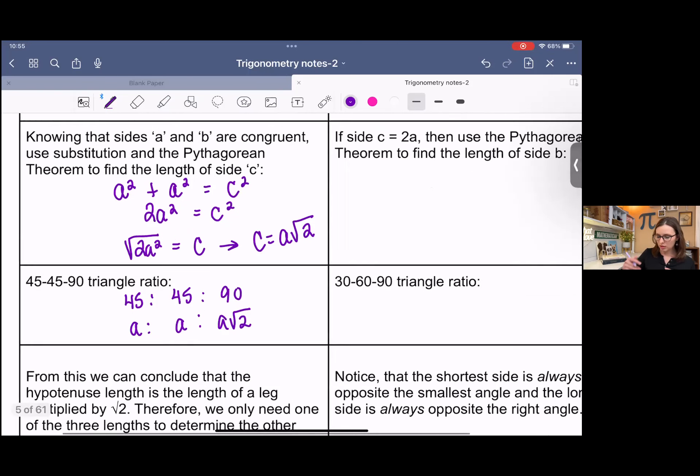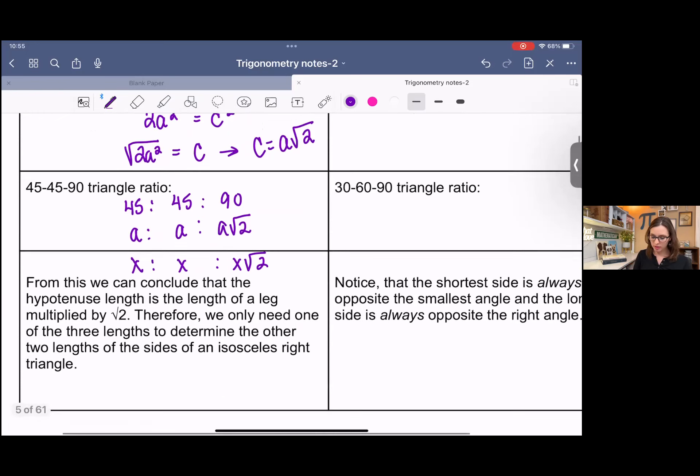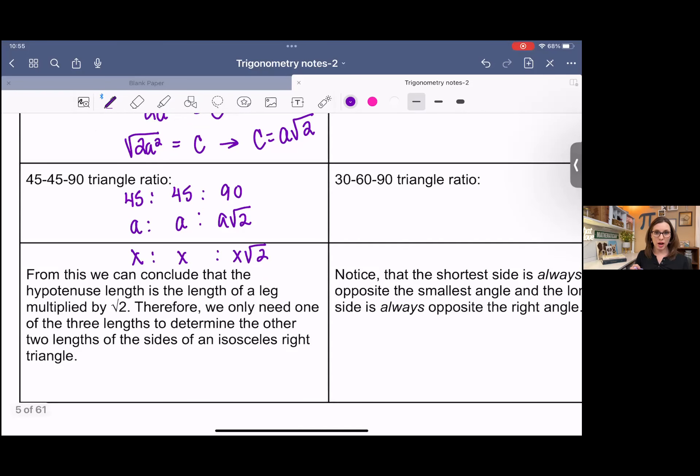You'll probably see this if you were to Google it or something, you'll probably see this as x, x, x root 2, but it's just any variable there. It's fine as long as you have that same model. So from this, we can conclude that the hypotenuse length is the length of a leg times square root 2. So we only need one of the three sides.